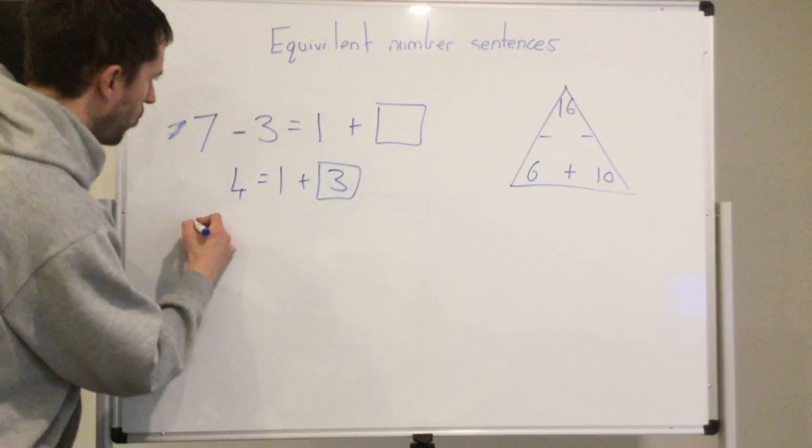13 plus 5 is the same as me saying something take 4. First thing I need to do is solve this side. 13 plus 5 equals 17... 18, sorry, 18.